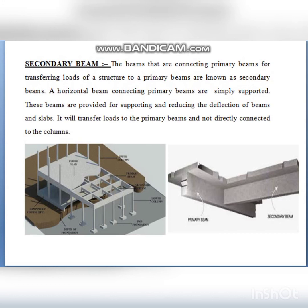So how do you use this concept in mini projects? We can use manual calculation. Column to column, we use primary beams. For secondary beams, it can be beam to beam, wall to wall, or one side wall and one side column. That is how we use and distinguish between primary and secondary beams, explaining the major difference along with diagrams.